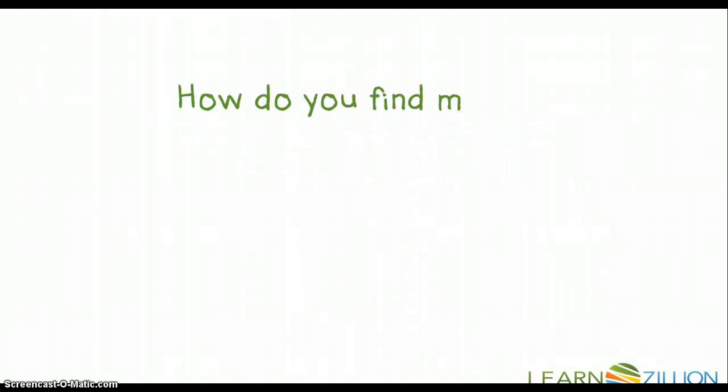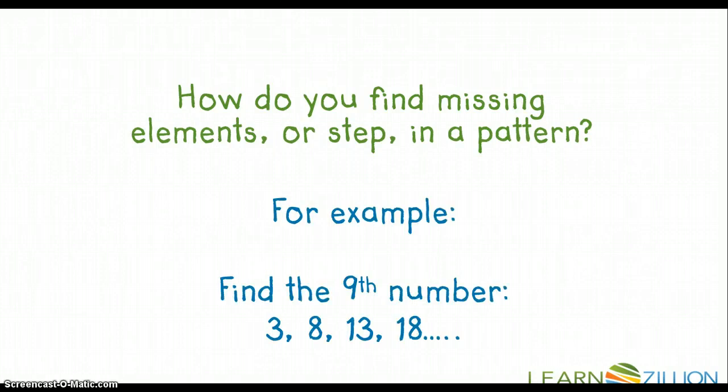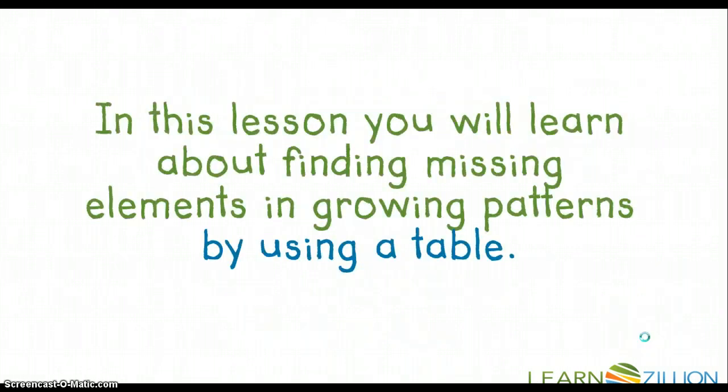So our guiding question for today is, how do you find missing elements or steps in a pattern? For example, find the 9th number when you already have the numbers 3, 8, 13, and 18. And as you can see here, we only have 4 steps here. We want to know what happens all the way over here in the 9th step. We need to find the 9th number. So today, in this lesson, you will learn about finding missing elements and growing patterns by using a table.